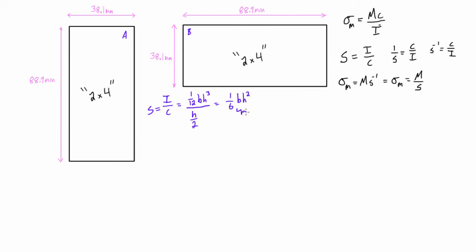Now, base times height for a rectangular is just equal to the cross sectional area. So what we can also do is we can write this as 1/6 times the cross sectional area, and we still have one extra h there, so times h.